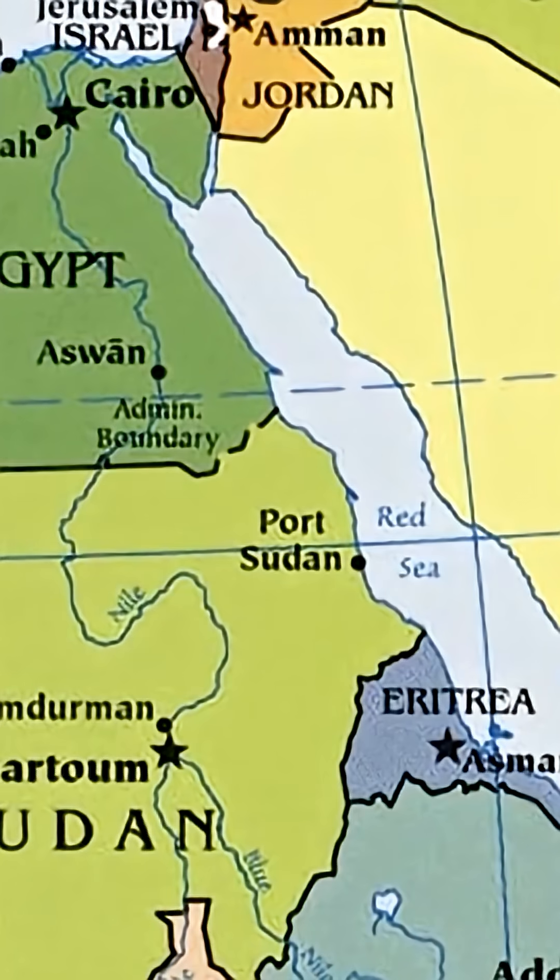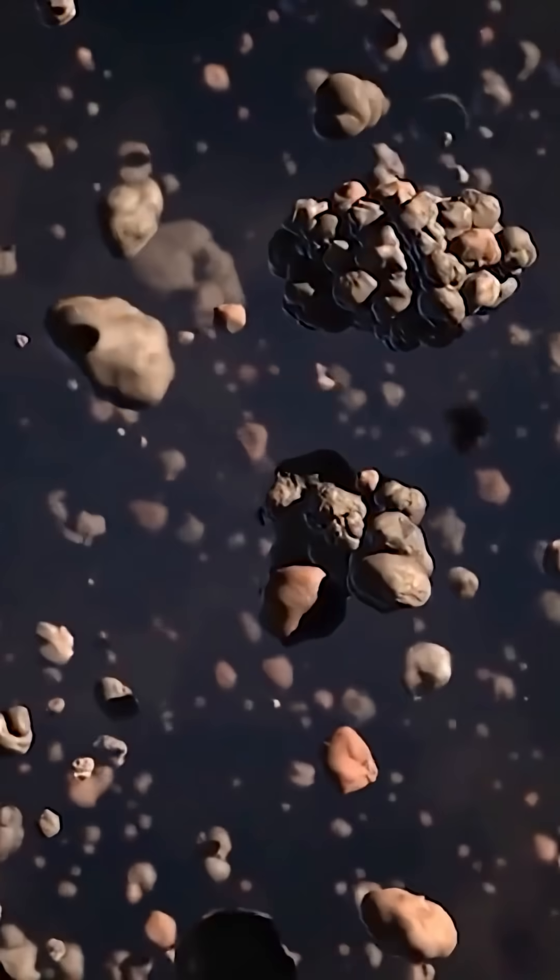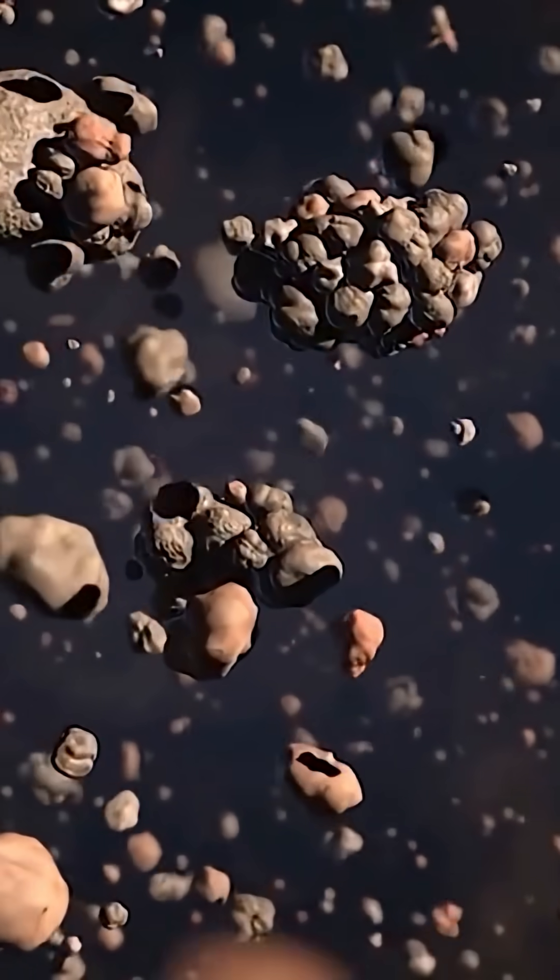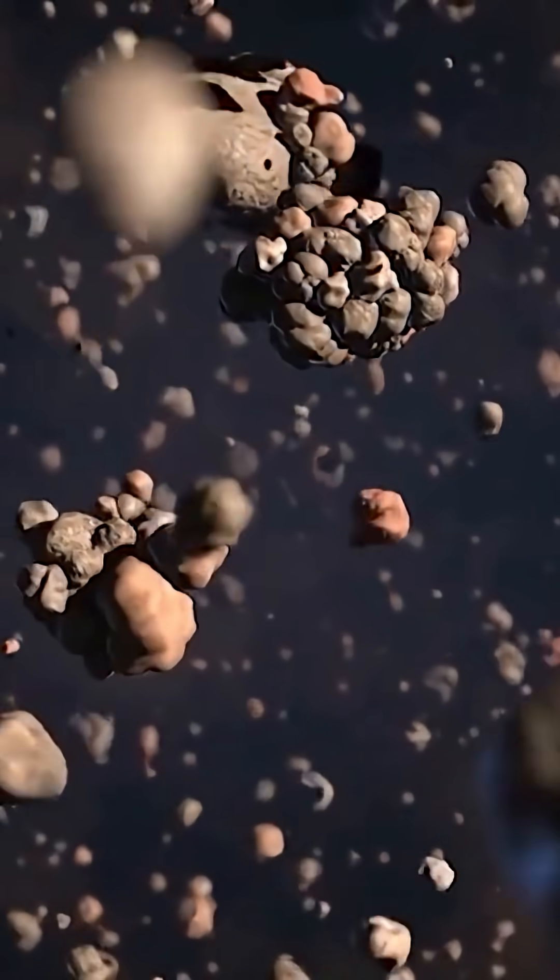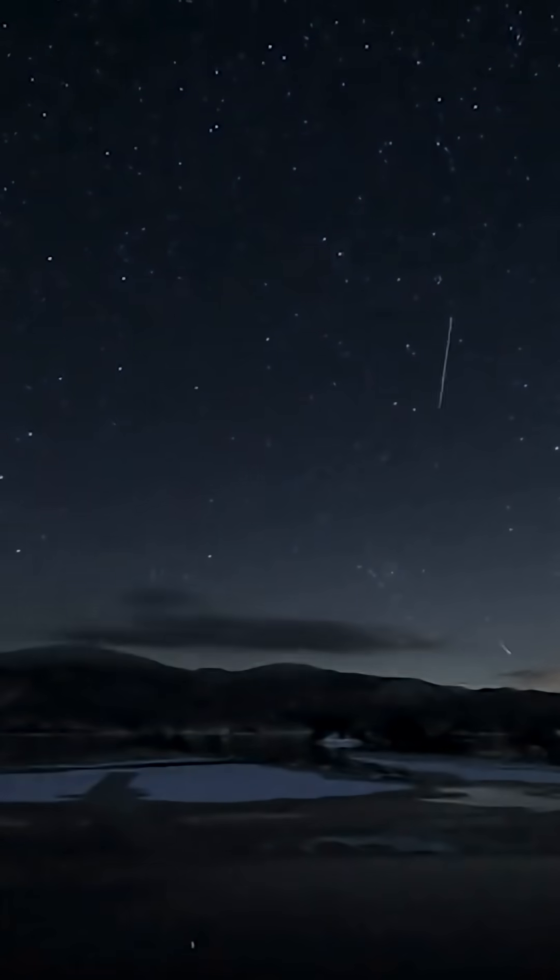When the meteor comes in contact with the Earth's surface, it is then called a meteorite. Let's summarize: meteoroids are the fragments and space debris caused by the collision of asteroids, comets, and other bodies. When these space debris enter the Earth, they are known as meteors.